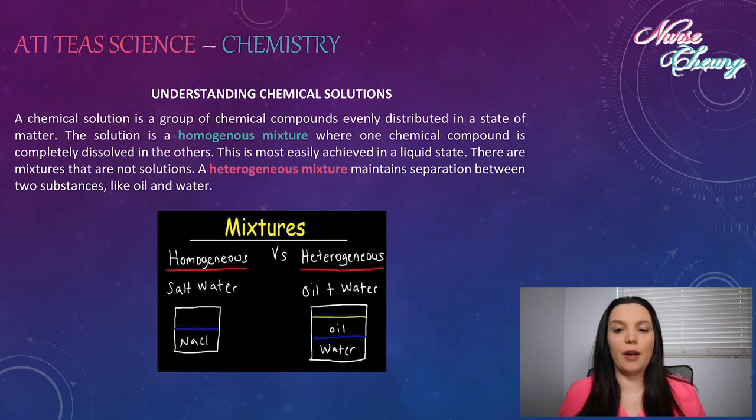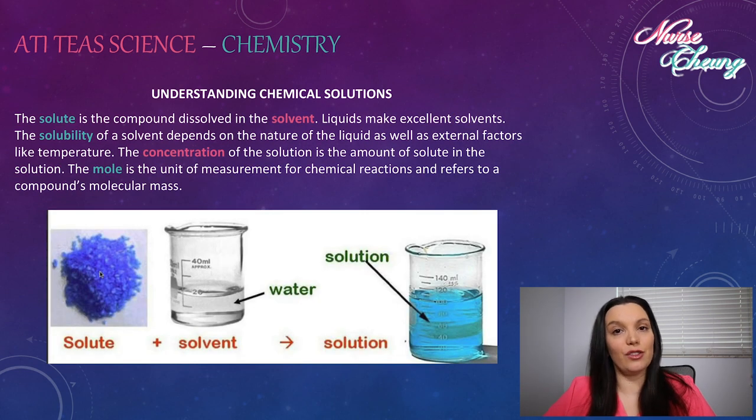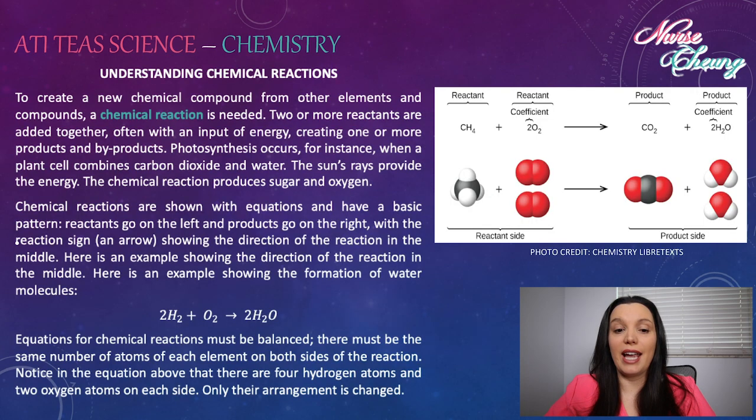A chemical solution is a group of chemical compounds evenly distributed in a state of matter. The solution is a homogeneous mixture in which one chemical compound is completely dissolved in the other, like water and salt. This is most easily achieved in a liquid state. There are mixtures that are not solutions. For example, a heterogeneous mixture maintains separation between two substances such as oil and water. The solute is a compound dissolved in the solvent. Liquids make excellent solvents. The solubility of a solvent depends on the nature of the liquid as well as external factors like temperature. The concentration of the solution is the amount of solute in the solution. The mole is the unit of measurement for chemical reactions and refers to the compound's molecular mass.